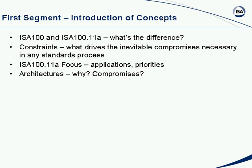For the first 20-to-30-minute segment, we're going to talk about concepts — in particular the difference between ISA 100 and the .11a standard. We'll talk about constraints, what drives the inevitable compromises necessary in the standards process, and we'll talk about the particular focus for ISA 100.11a — what applications and priorities are for that standard. We'll talk about architectures, why architectures are important, and why compromises are necessary in order to get to a solution.